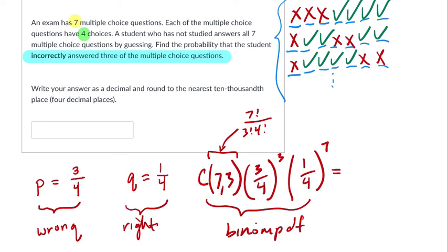So I say there are seven trials. That's my seven questions. The probability of getting a question wrong is 0.75. I want to do that three times and I get my answer 0.0576.